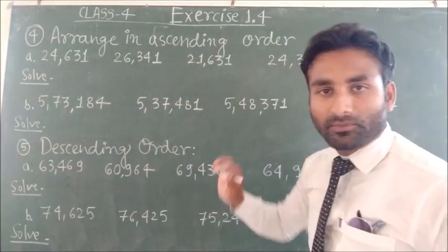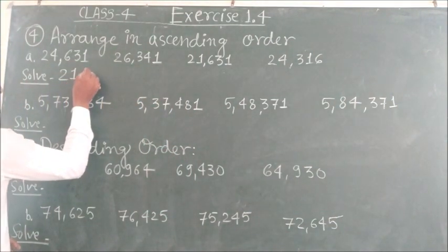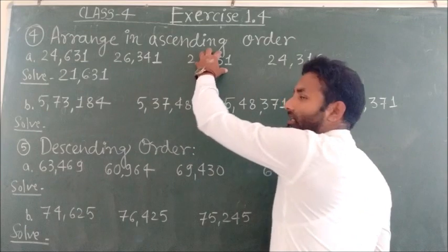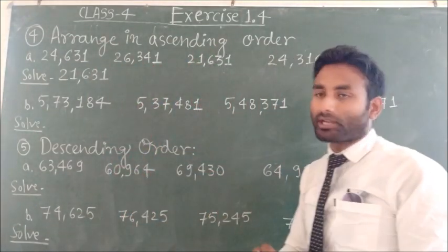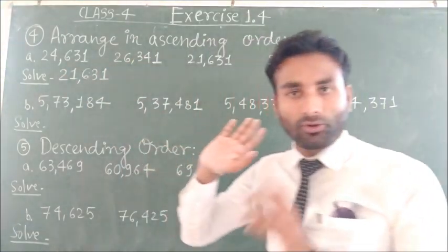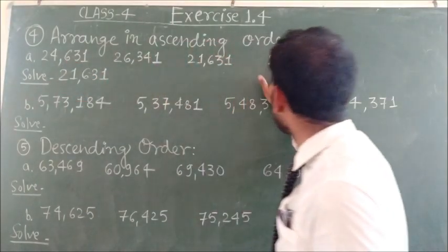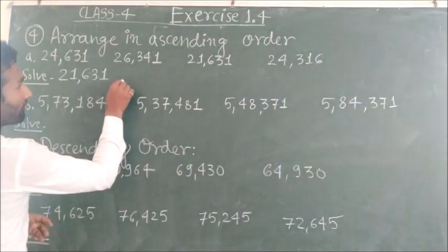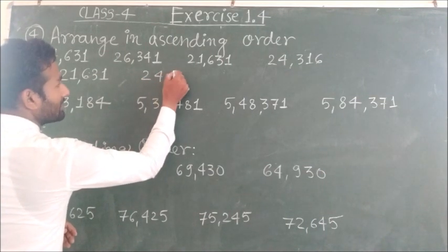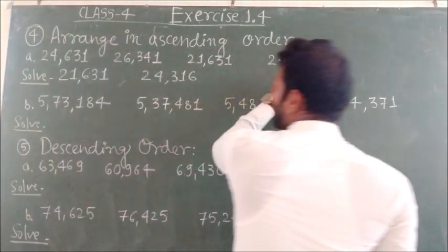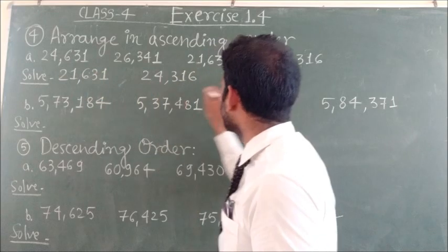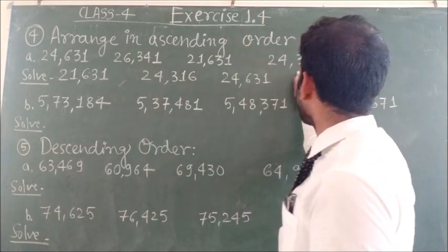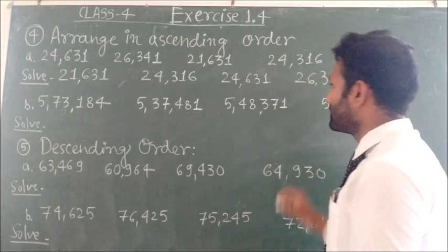We can write 21,631 first. One, two, and three - the smallest is one. Next, between 24 and 24, we compare further: 3 vs 6, so 3 is smaller. We write 24,360 next.